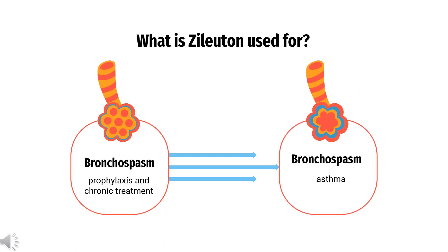What is Zileuton used to treat? For the prophylaxis and chronic treatment of asthma in adults and children 12 years of age and older.